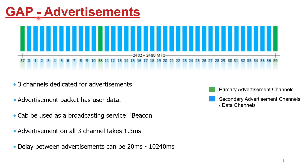GAP is used for advertisements. BLE has a total of 40 channels ranging from 2400 to 2480 MHz with a separation of 2 MHz. Out of these 40 channels, there are three green channels — channels 37, 38, and 39 — which are dedicated for primary advertisements. The remaining blue channels are used for advertisements, data transfer, and are also called secondary advertisement channels or data channels.